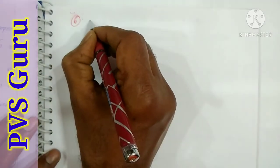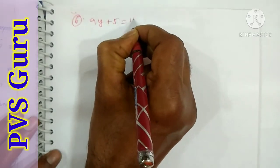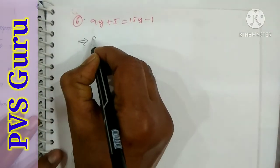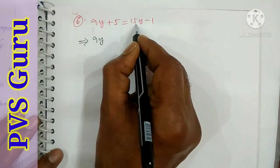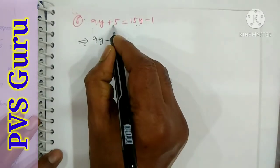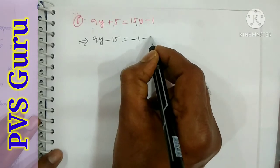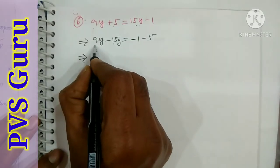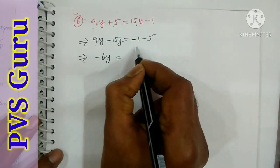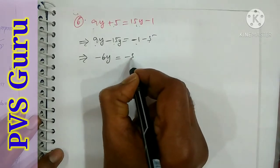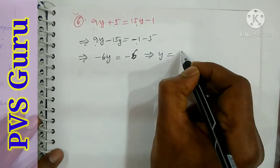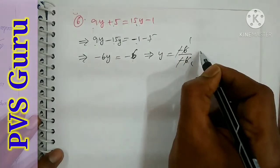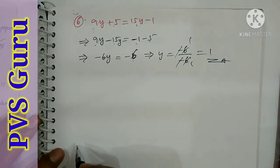Question number 6: 9y plus 5 is equal to 15y minus 1. Take 15y to the left side and 5 to the right side. 9y minus 15y is minus 6y. Minus 1 minus 5 is minus 6. Then y equals minus 6 by minus 6, so y is equal to 1.